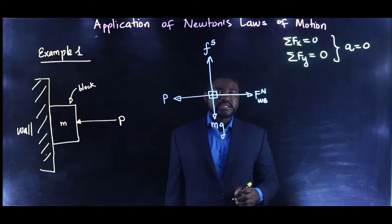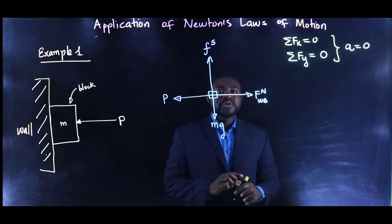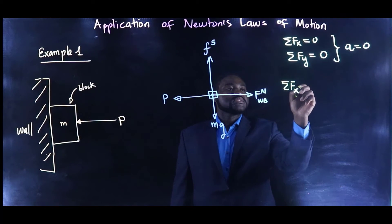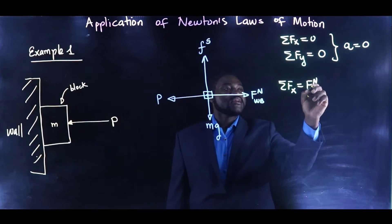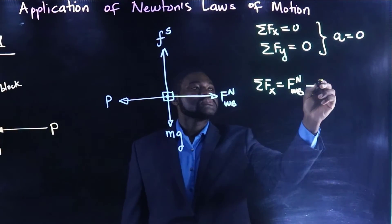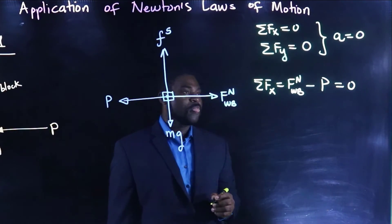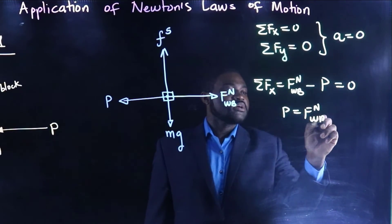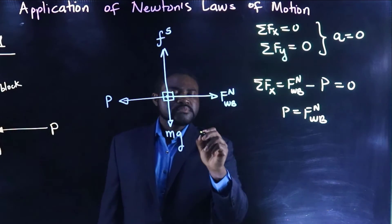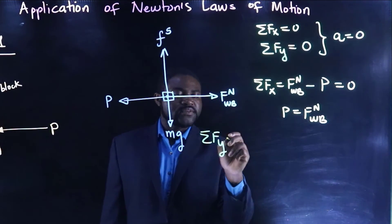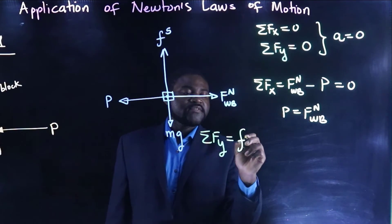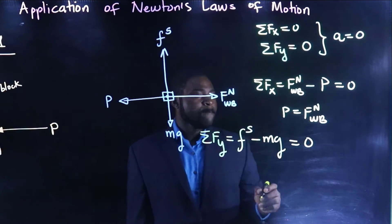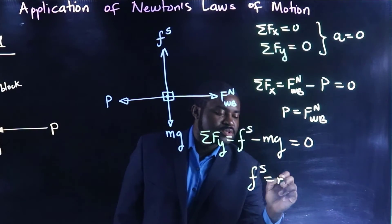Forces to the right are positive and forces to the left are negative. The summation of forces in the x direction gives: F_N (wall on block) minus P equals zero, so P equals F_N (wall on block). The summation of forces in the y direction gives: F_s minus mg equals zero, so the static friction force F_s equals mg.